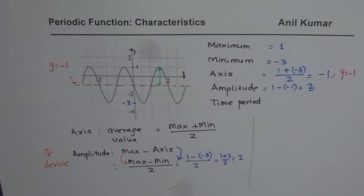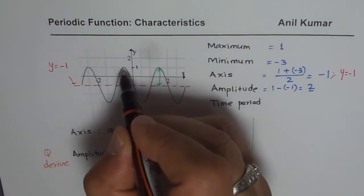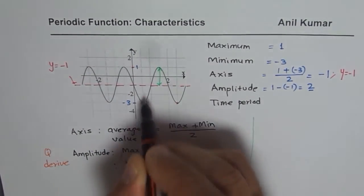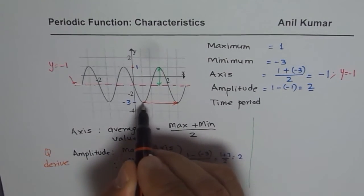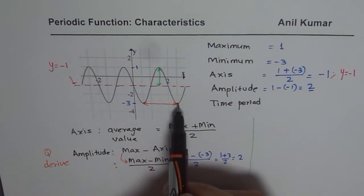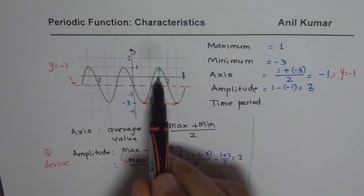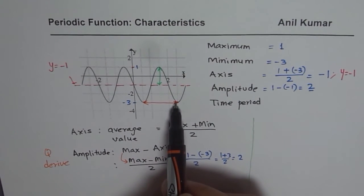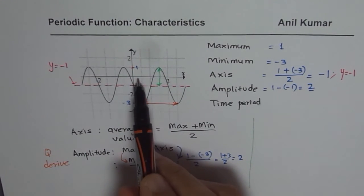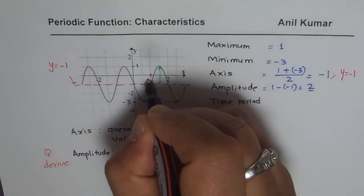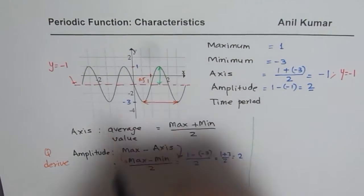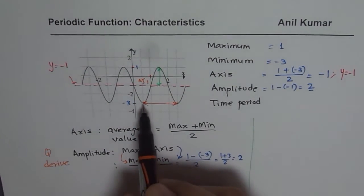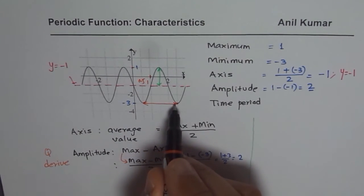Now let's talk about time period. The time period is the duration after which the cycle is repeated. For example, measuring from one minimum value to the next minimum value gives the time period. Note that the scale on the horizontal axis is 0.5 units per division, so be careful not to count those small divisions as one full unit.